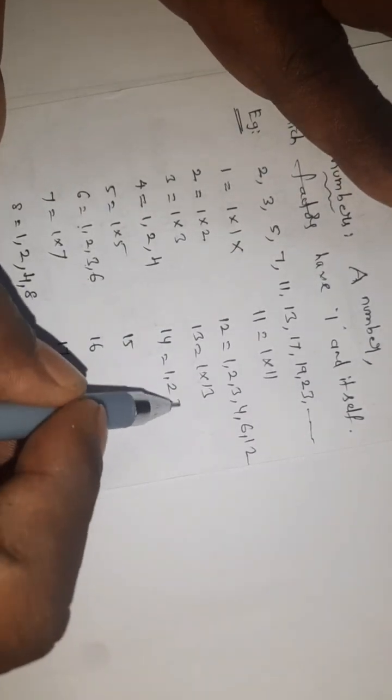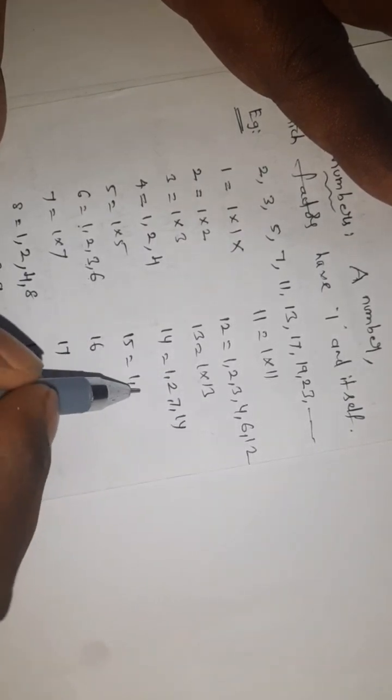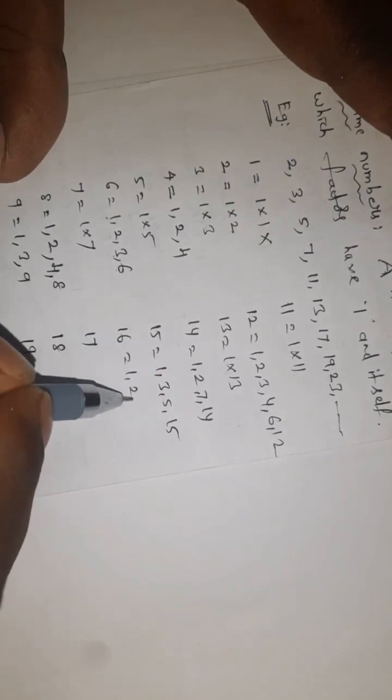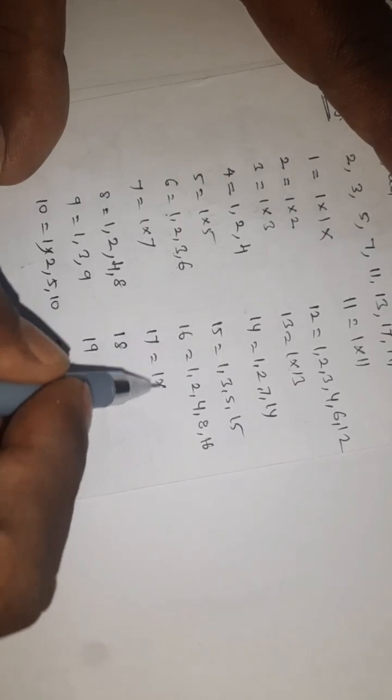Twelfth: 1 table, 2 table. Fourteenth: 1 table, 2 table, 7 table, 14 table. Fifteenth: 1 table, 3 table, 5 table, 15 table. Sixteenth: 1 table, 2 table, 4 table, 8 table, 16 table.